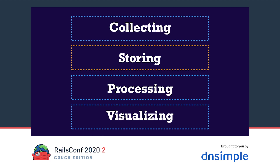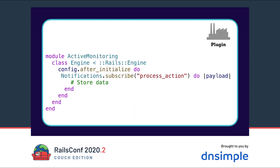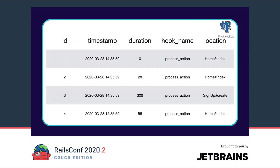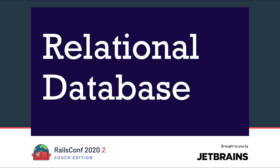In this chapter we will implement the storage of the collected metrics. As a first step we need to install the ProcessAction subscriber, which we do in a Ruby on Rails plugin. Plugins are a way to extend Rails and hook into its internals. The ProcessAction event payload provides us with the controller and action name and the execution runtime. With this information we could build a table with an ID, a timestamp, the duration calculated from start and finish times, the hook name, and the location — the controller and action name. This looks a lot like a relational database.